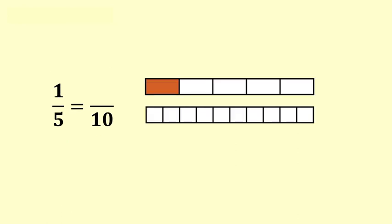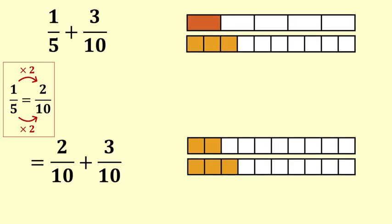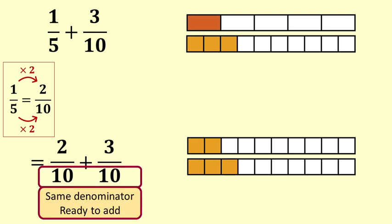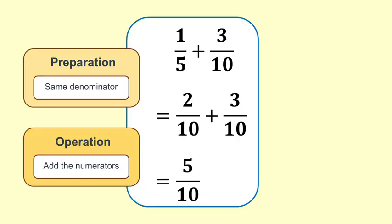Now we need to express the two fractions using the common denominator. How many fives in 10? There are two fives in 10. To convert fifths to tenths we multiply the bottom by 2, and to keep the amount the same we also multiply the top by 2. You can see in the bar diagram that 2 tenths is the same quantity as 1 fifth. The 3 tenths is already in tenths so we leave it as it is — sometimes only one fraction needs to change. That is the end of the preparation step; both fractions have the same denominator, ready for adding. Pause to make sure you understand each step. Now we add: 2 tenths plus 3 tenths equals 5 tenths.